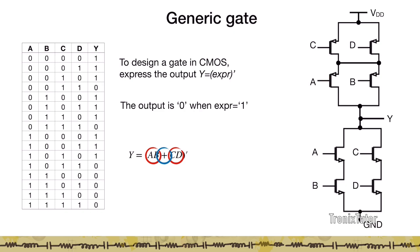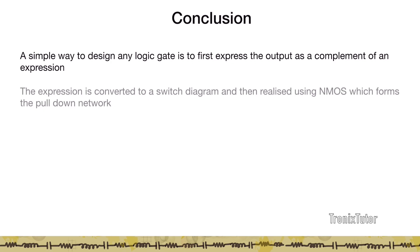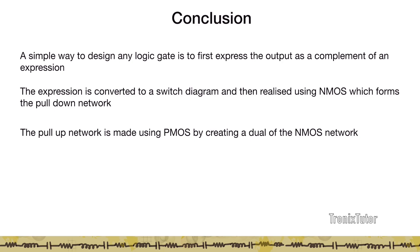Because C and D are connected in series in the NMOS, they become connected in parallel in the PMOS. A and B, which were in series in the NMOS, become parallel in the PMOS. Similarly, C and D in series become C and D in parallel in the PMOS, and the two parallel arms in the NMOS become a series connection in the PMOS. To conclude: always express the output as a complement of an expression, convert it to an NMOS or PMOS switch diagram, and then create the dual network for the other transistor type.